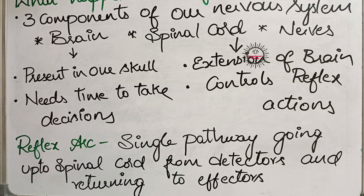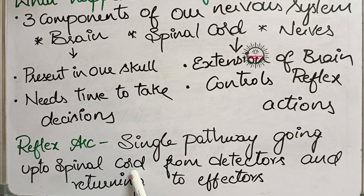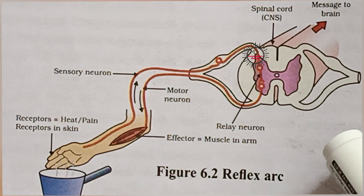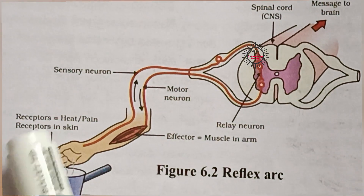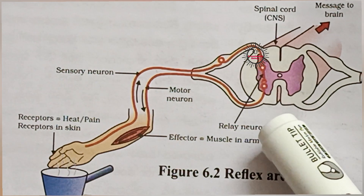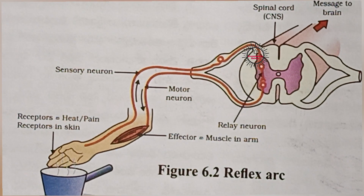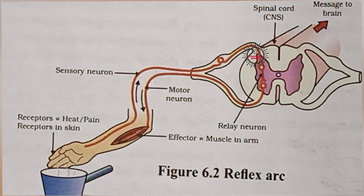In the first example, when we touch a hot object, the effector organ is our hand — we immediately withdraw it. When bright light focuses on our eyes, the effector organ is our eyelids, which shut our eyes. So the detectors first take information to the spinal cord, the spinal cord analyzes and gives a response within a fraction of seconds, and that response is taken to the effector organs. That pathway is called the reflex arc. Let us explain this briefly by showing a diagram. The reflex arc contains five components: first, receptor; second, sensory neuron; third, relay neuron; fourth, motor neuron; and fifth, effector organ.